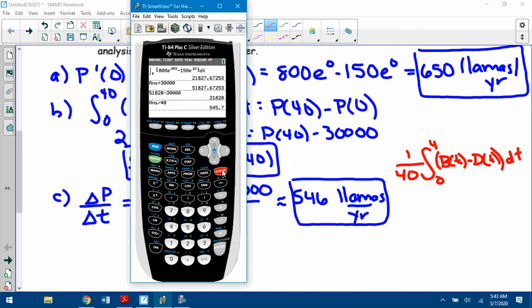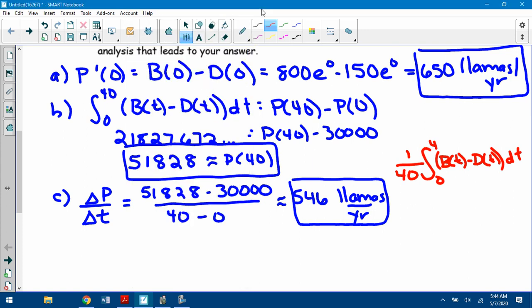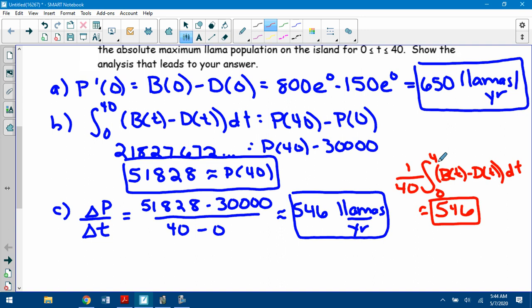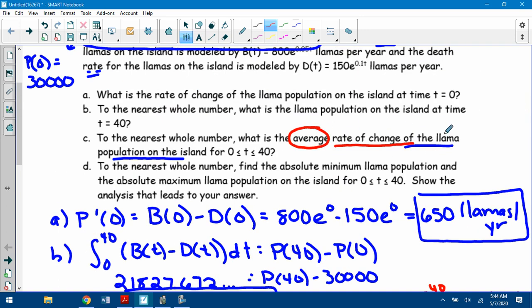And let's see what you get when you do that. It's 1 over 40 times the integral, Math 9, 0 to 40 of the birth rate, which again was 800 e to the 0.05t minus the death rate. So minus 150 times e to the 0.1t dt. Again, notice I put a dt there, and look what you get. 545.6, 546. You get the exact same thing. So when you see the word average, if it's average rate of change and you have an equation for the rate of change, you can use 1 over b minus a of the rate of change. That should have been 40, sorry.